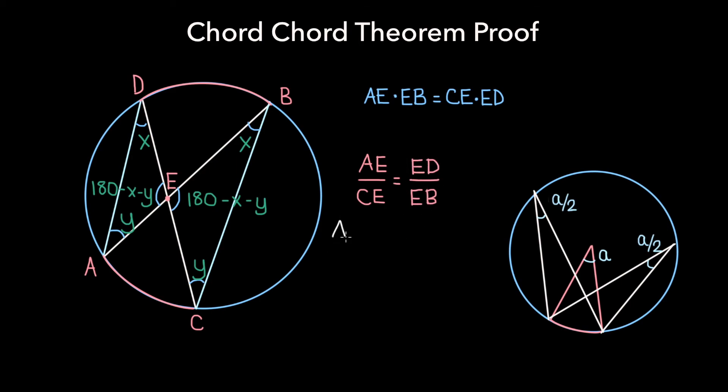If we cross multiply, we get that AE times EB is equal to CE times ED. And that's all there is to the proof of the Chord-Chord Theorem.